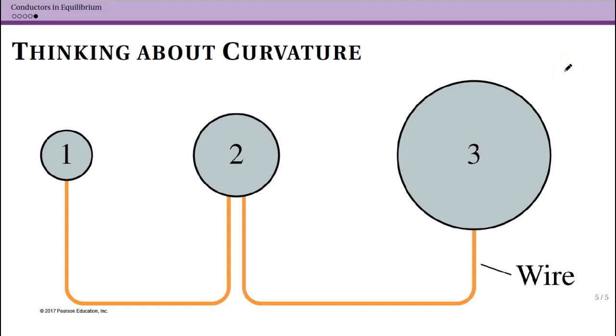Let's do an example where we think about curvature and its impact on the potential and the electric field. So I have three spheres here which are conducting, and they're connected by conducting wire.